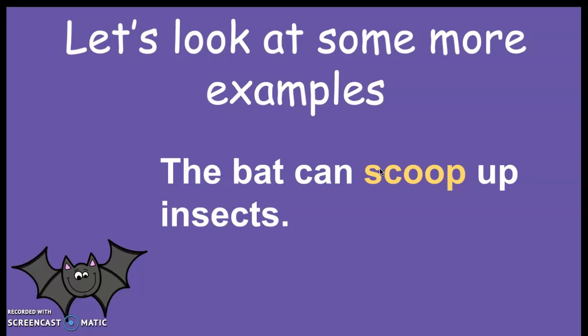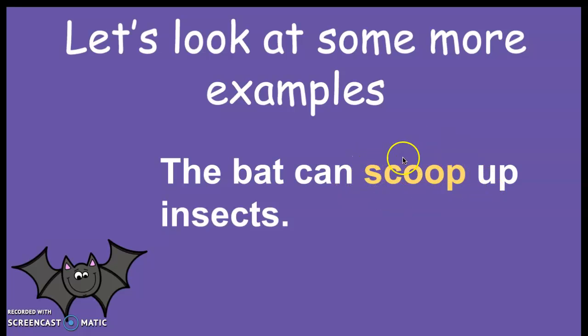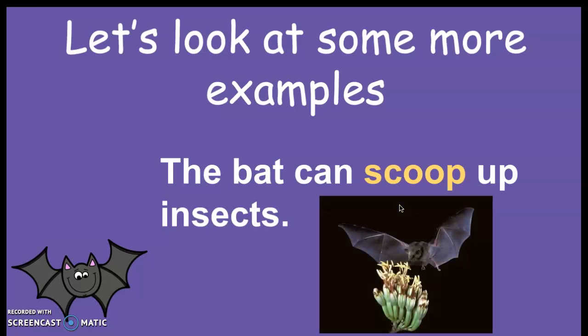Let's look at some more examples. Here's another sentence: the bat can scoop up insects. Which word do you think is the action in my sentence, or the verb? The bat can scoop up insects. That's right — the word scoop. Scoop is an action. The bat scooped it up.